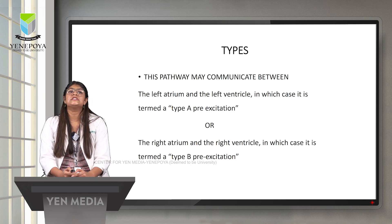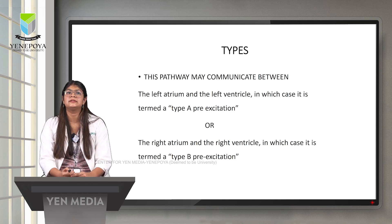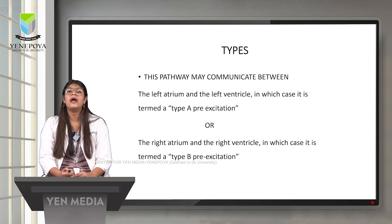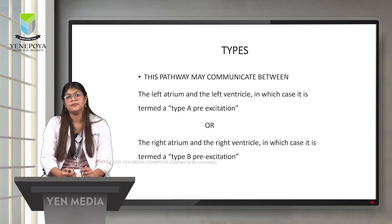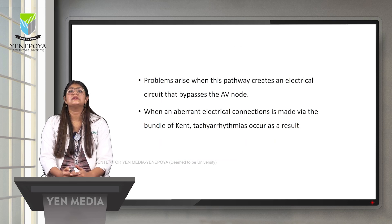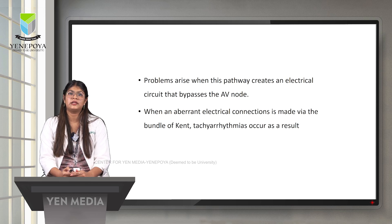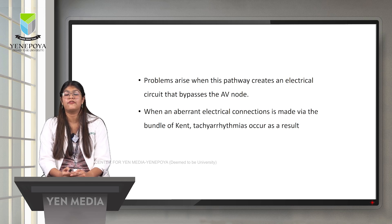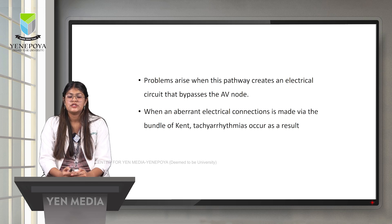There are two types of WPW syndrome based on the location of the pathway. If the pathway communicates between the left atrium and left ventricle, it is termed type A pre-excitation. Problems arise when this pathway creates an electrical circuit that bypasses the AV node; when an aberrant electrical connection is made via the bundle of Kent, tachyarrhythmias occur.